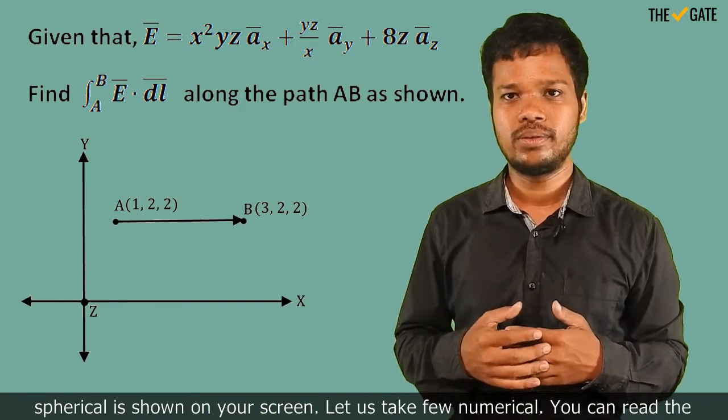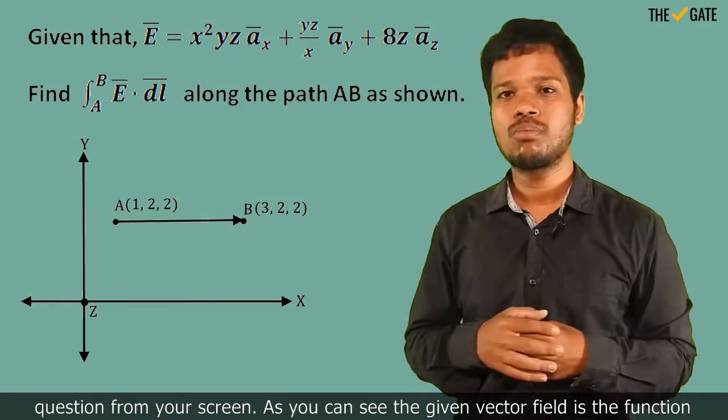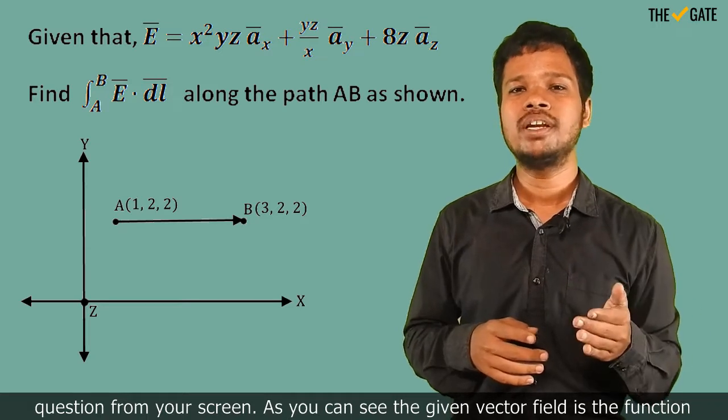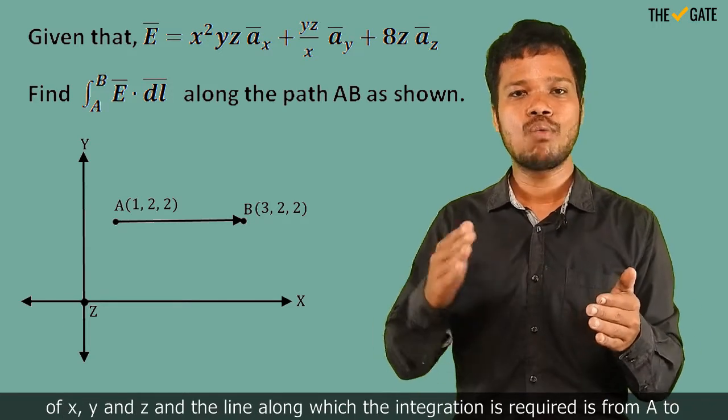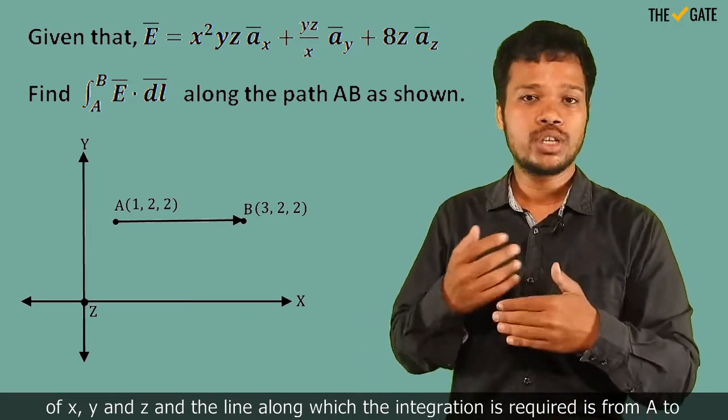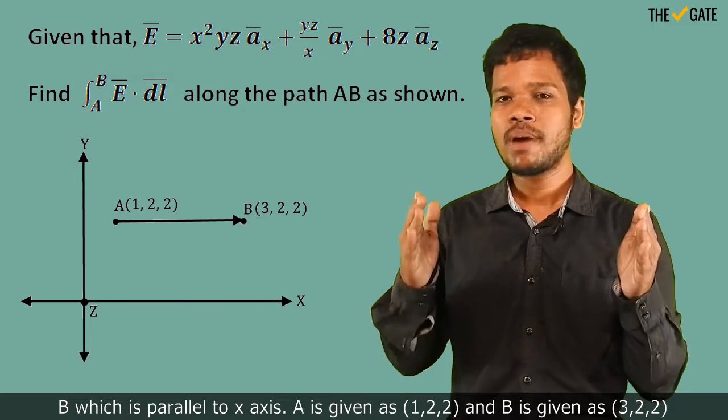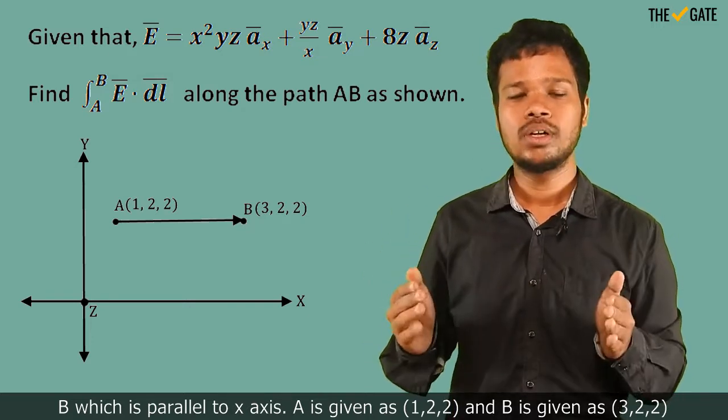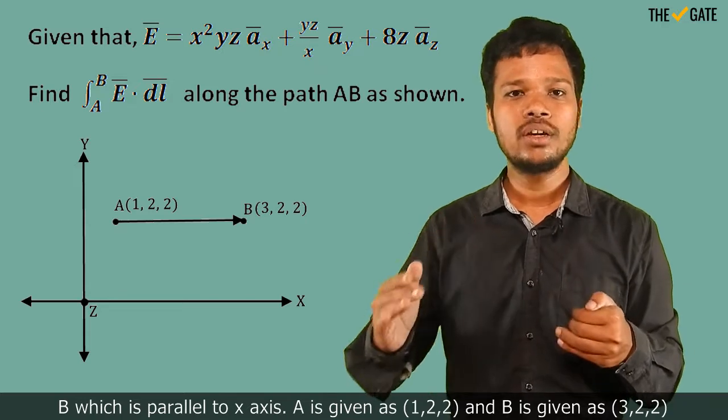Let us take a numerical example. You can read the question from your screen. As you can see, the given vector field is the function of x, y, and z, and the line along which the integration is required is from A to B, which is parallel to the x-axis. A is given as (1,2,2) and B is given as (3,2,2).